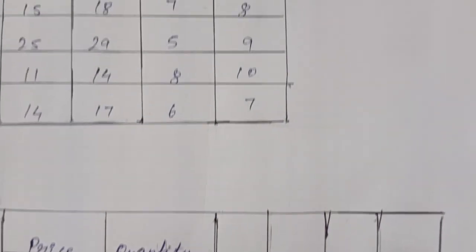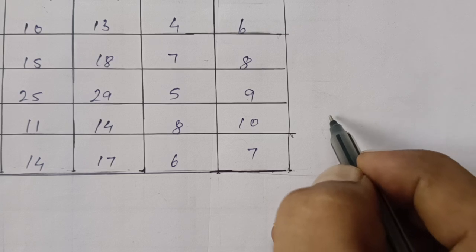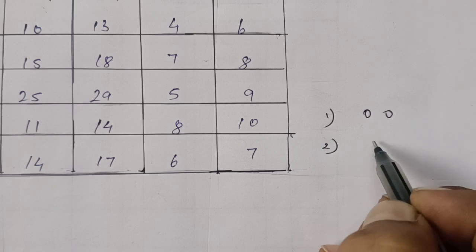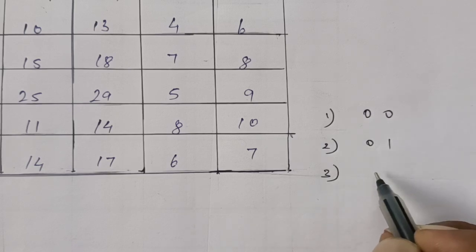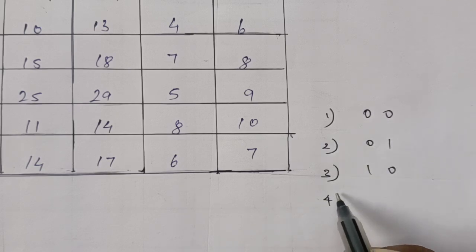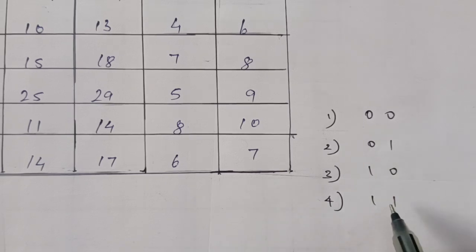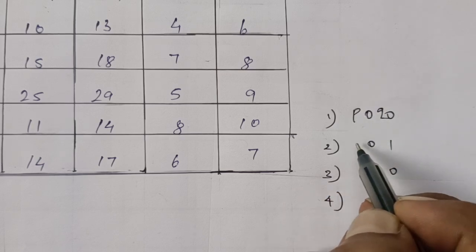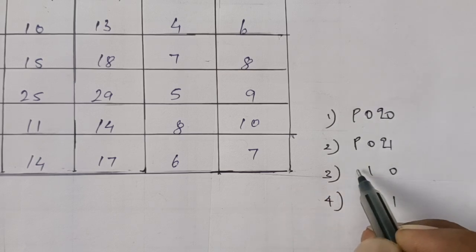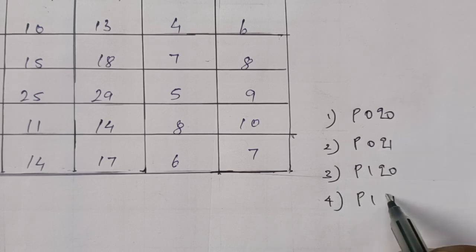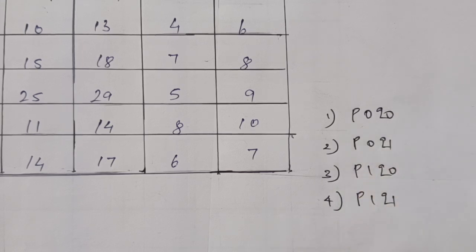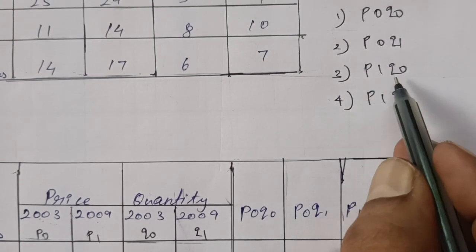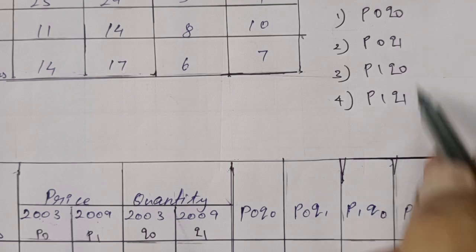The shortcut to memorize the columns is: 0, 0, 2, 0, 1, 3, 1, 0, 4, 1, 1. The four summation columns are: first P0Q0, second P0Q1, third P1Q0, and fourth P1Q1. This is the formula pattern to memorize.